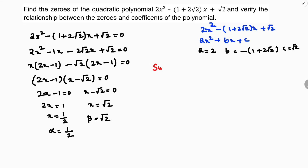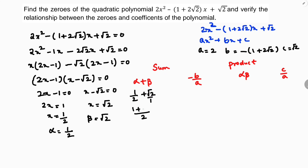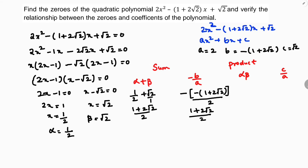First I'll verify the sum of zeros. Alpha plus beta equals 1/2 plus √2. Taking LCM of 2 gives (1 plus 2√2) divided by 2. And minus b by a equals minus of minus(1 plus 2√2) divided by 2, which equals (1 plus 2√2) over 2. So clearly alpha plus beta equals minus b by a. ✓